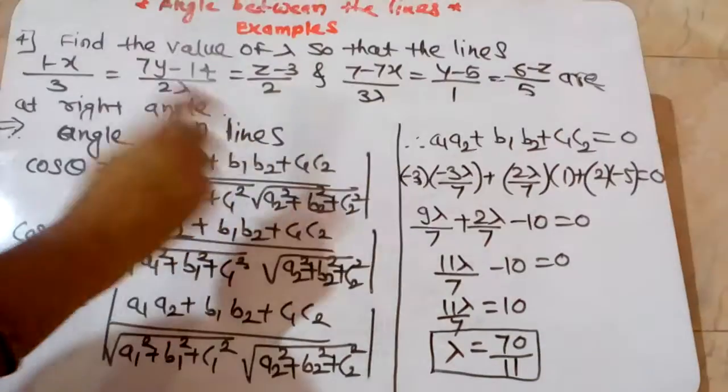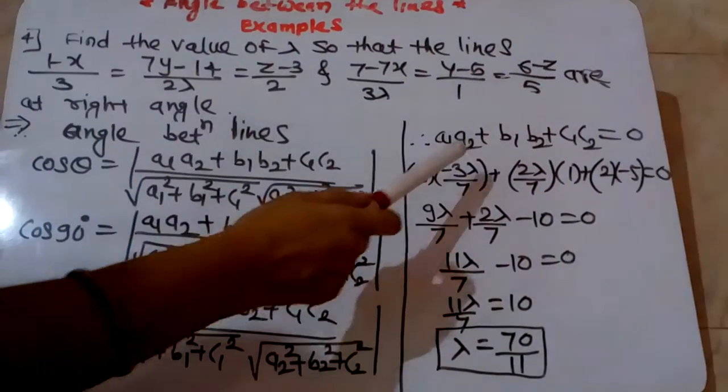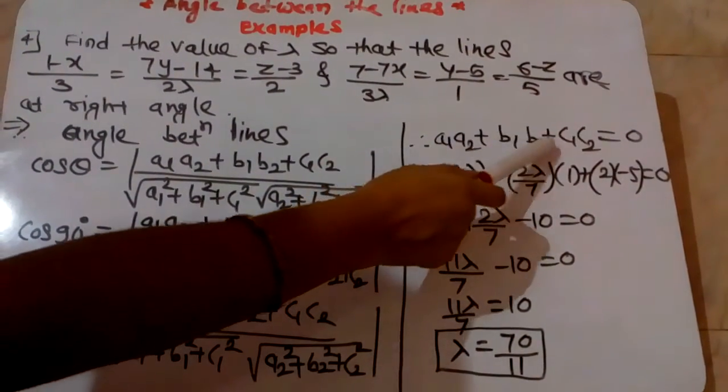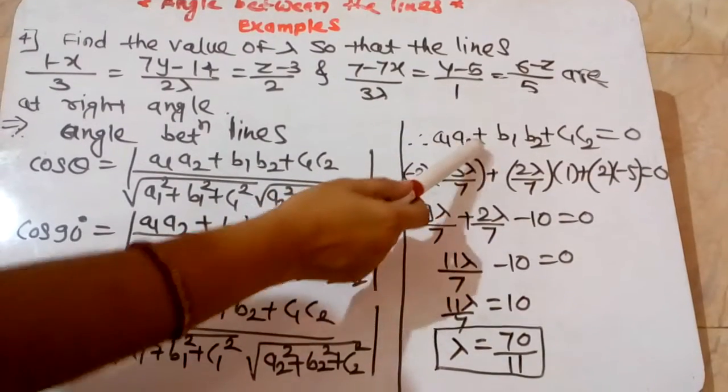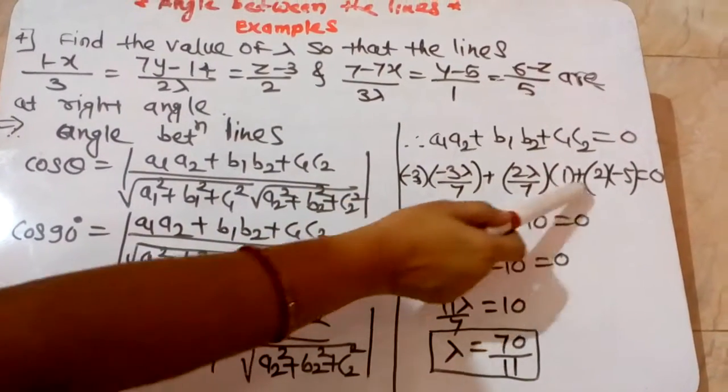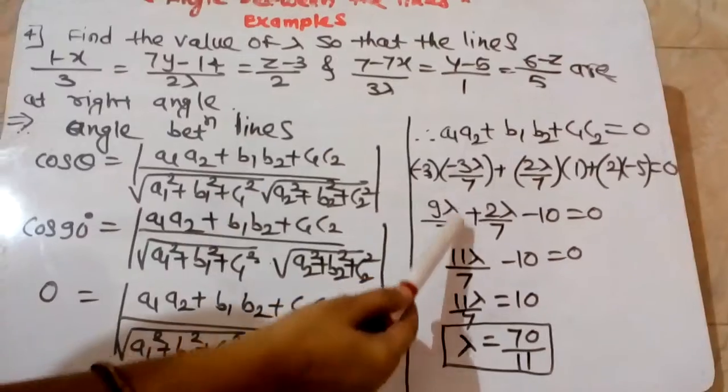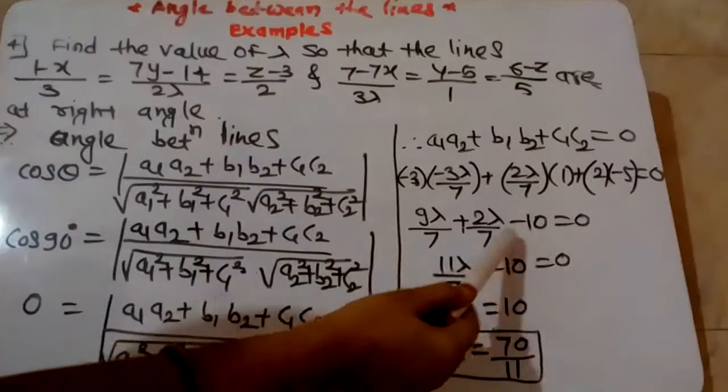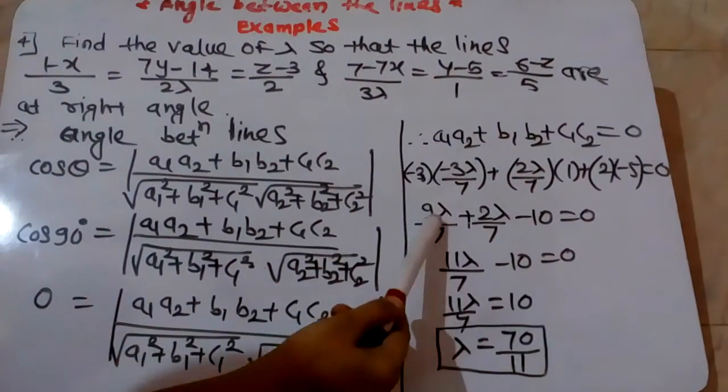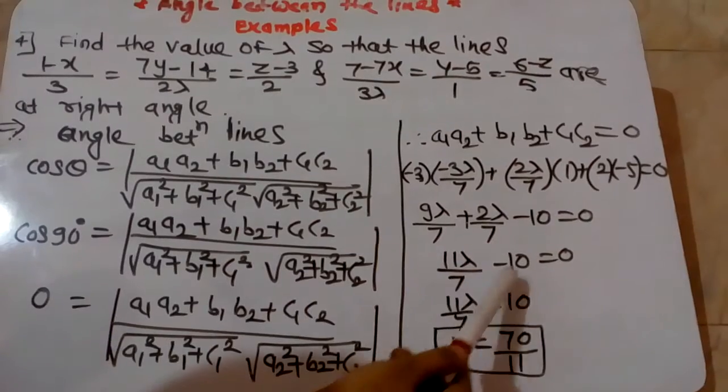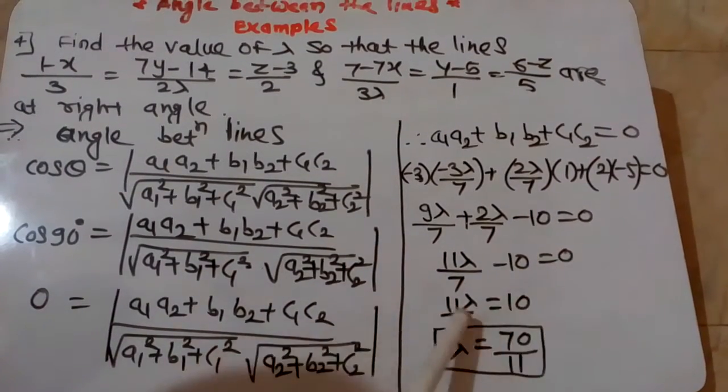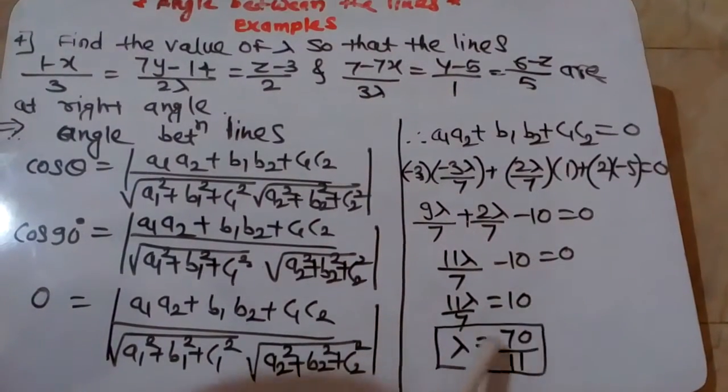Now put the values: 9λ/7 + 2λ/7 - 10 = 0. That gives us 11λ/7 - 10 = 0. Therefore, 11λ/7 = 10, and λ = 70/11.